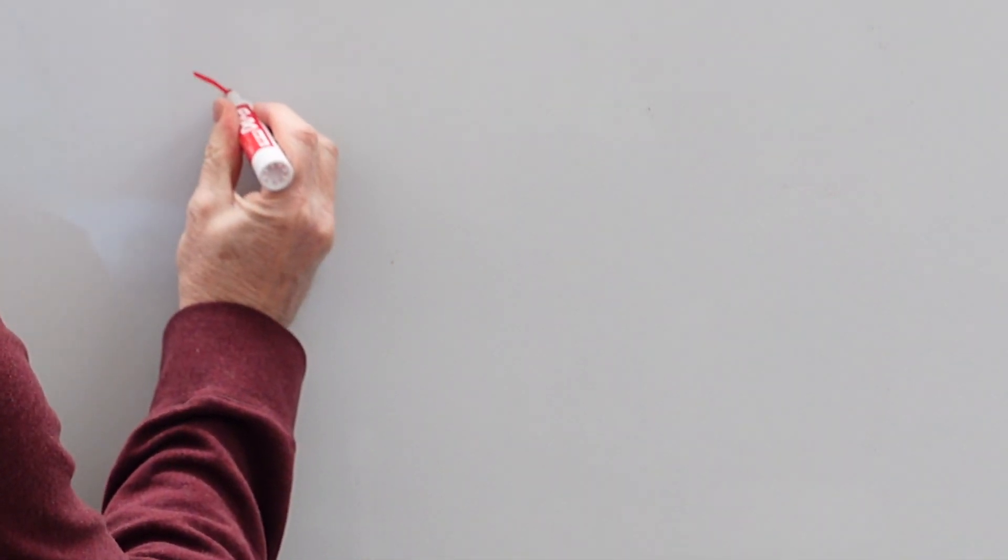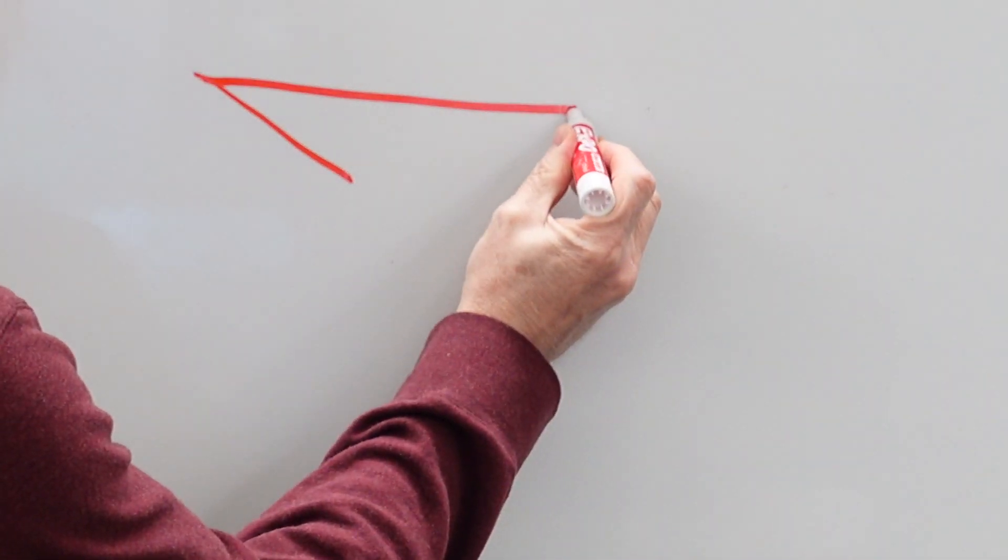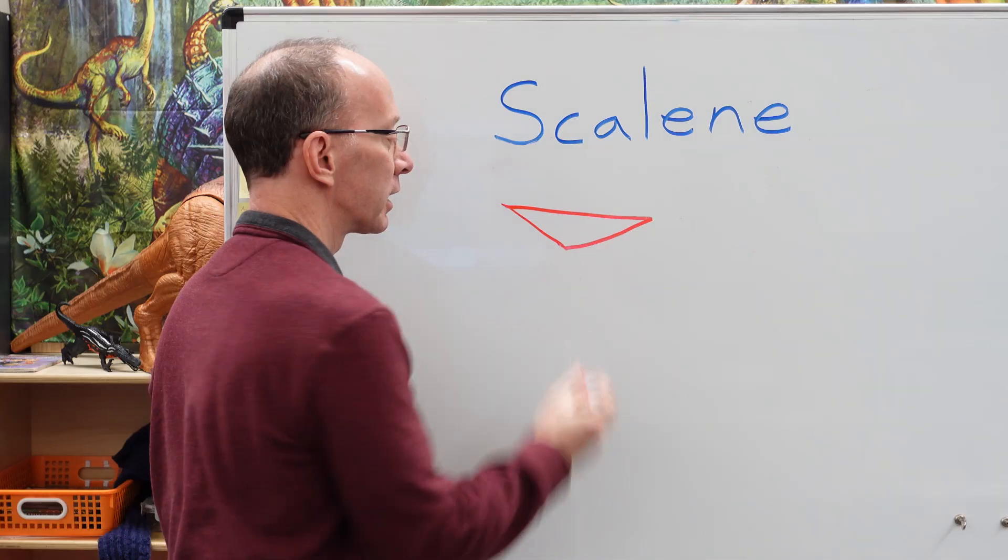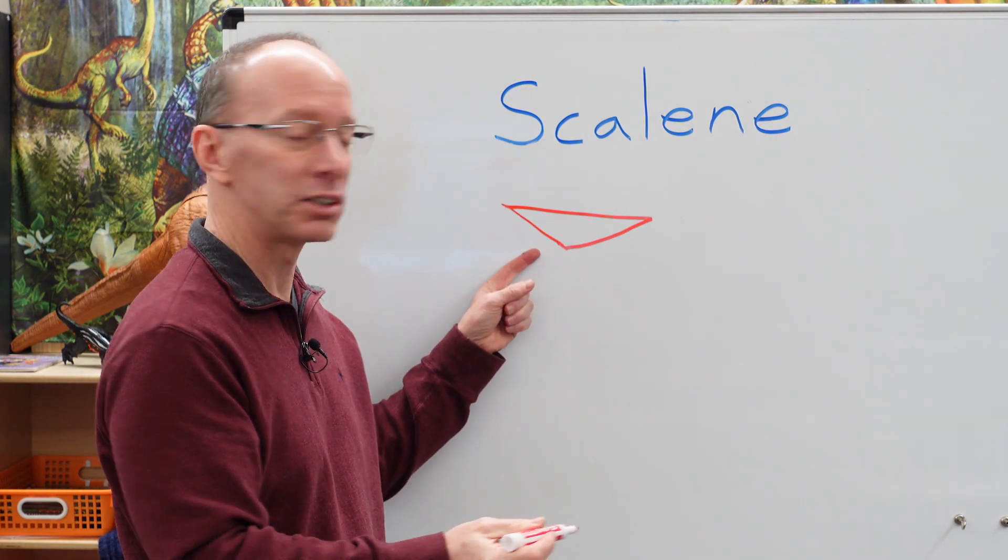So maybe we'll have a line that's kind of slanted like this, and then a longer line, and then another line that comes in to connect it. That's an example of a scalene triangle.